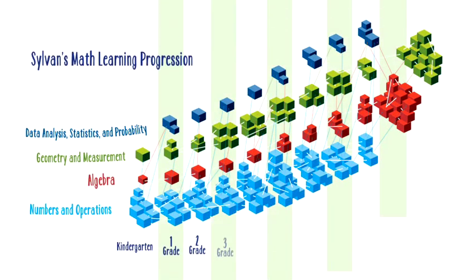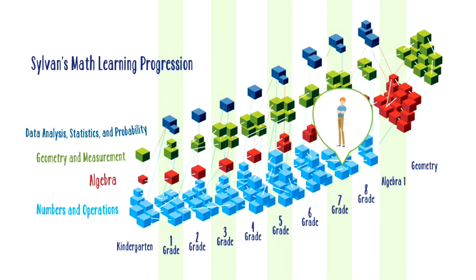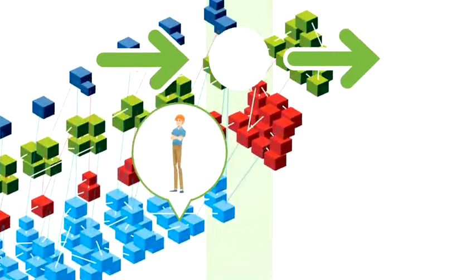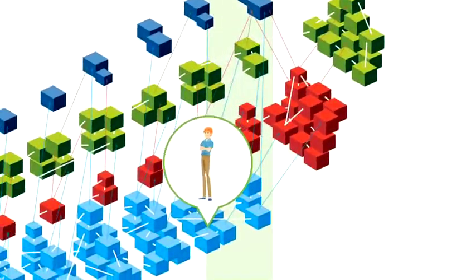The results of this comprehensive assessment suite pinpoint exactly where your child should be placed along Sylvan's learning progression. This progression maps out all the skills students need to learn from kindergarten through 12th grade in the order that makes the most sense to learn them.